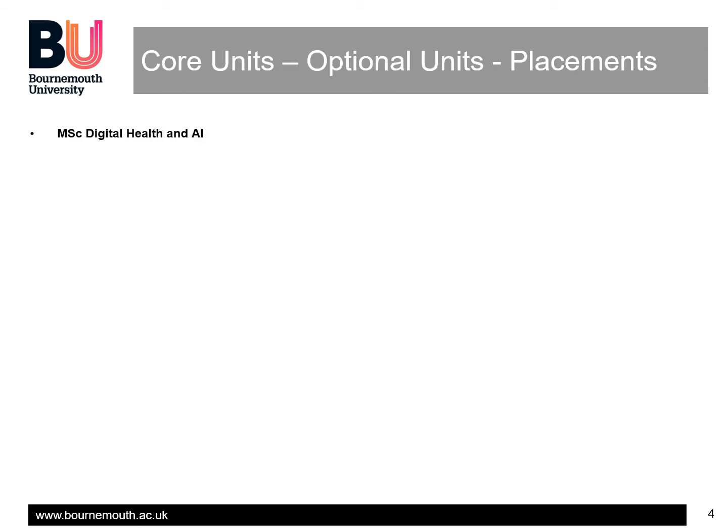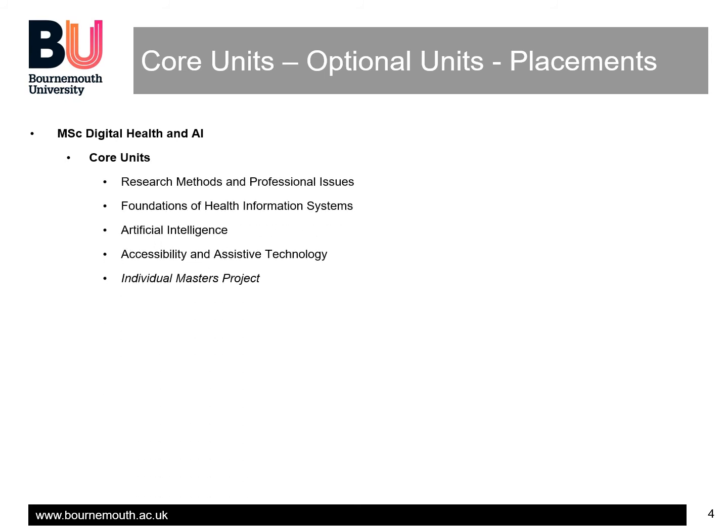The MSc Digital Health and AI is based on core units which include: research methods and professional issues, foundations of health information systems, artificial intelligence, and accessibility and assistive technologies. These will equip you with the right knowledge and experience for pursuing your own independent research on an individual master's project.